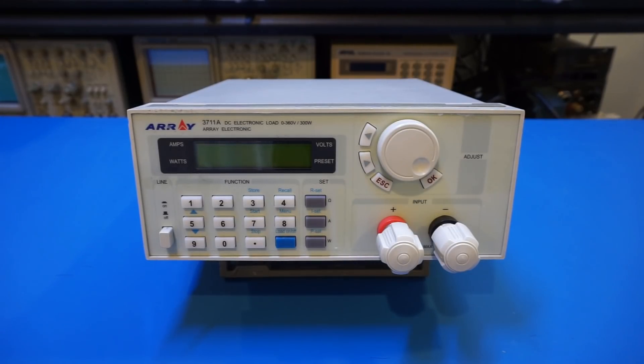Now this particular model is capable of handling loads up to 300 watts with a maximum current of 30 amps and a maximum voltage of 300 volts. There is also a 3710A version and the difference is the maximum load which comes in at 150 watts, and I would assume that the internal circuitry is largely the same as the 300 watt 3711A and the main difference would be the number of power MOSFETs and the control firmware.